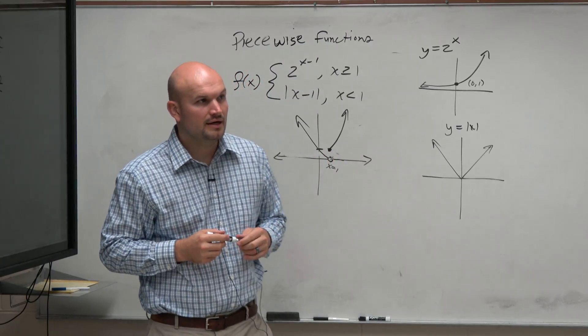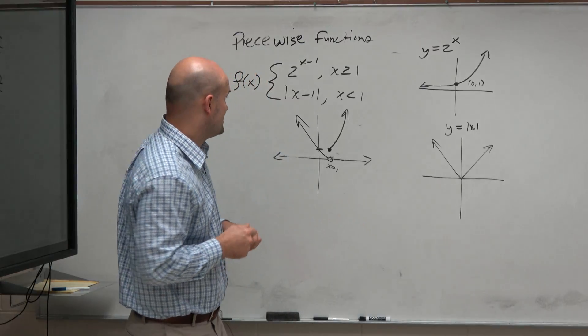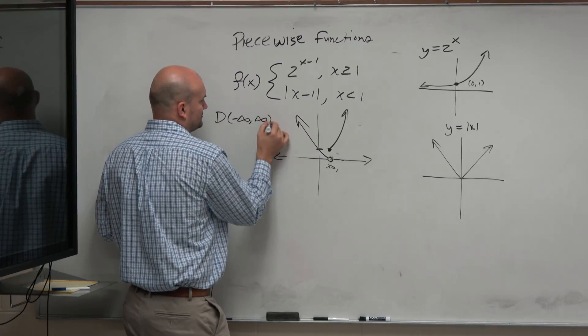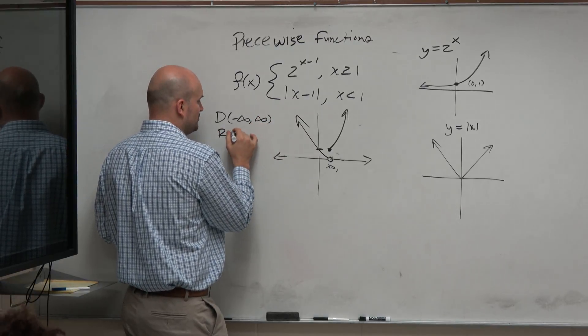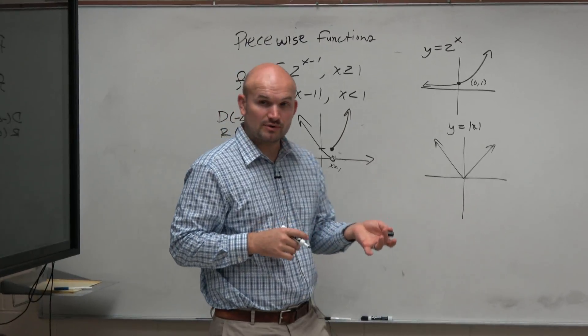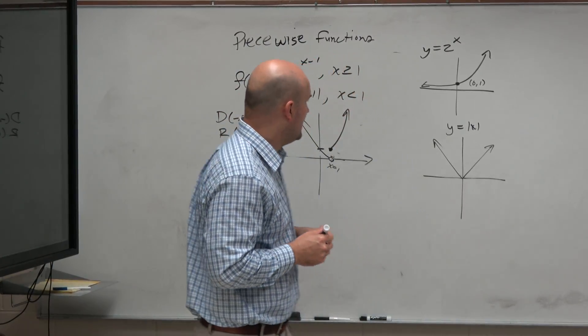There you go. So that's what the graph would look like. Now, from the graph, I think it's helpful to identify the domain, which would be, in this case, all real numbers. And the range would be from 0 to infinity. Remember, 0 is not included. So we're going to use a parentheses.